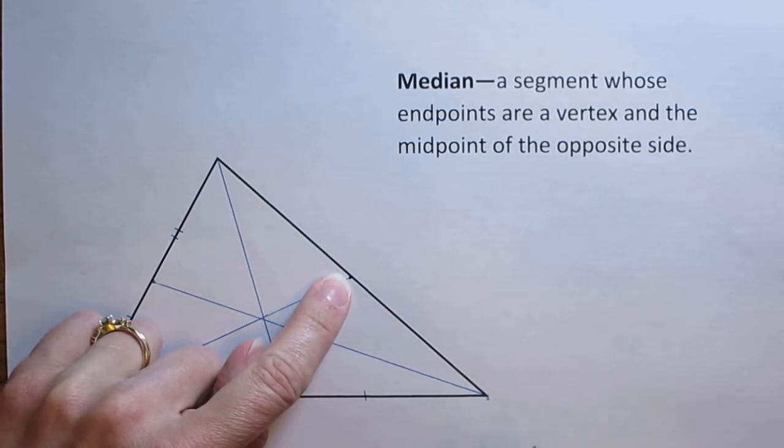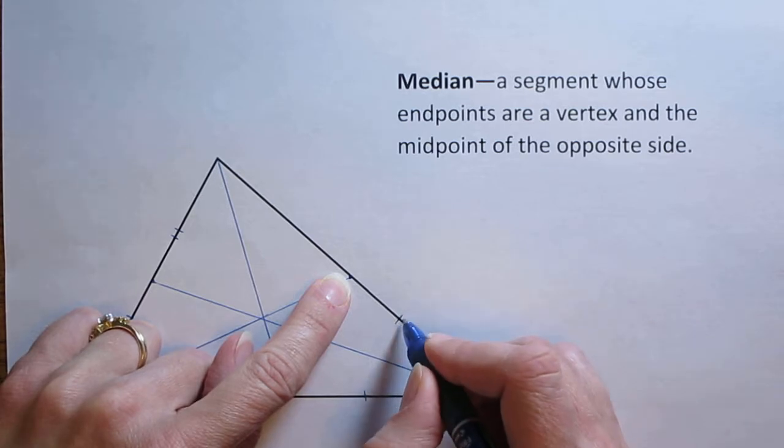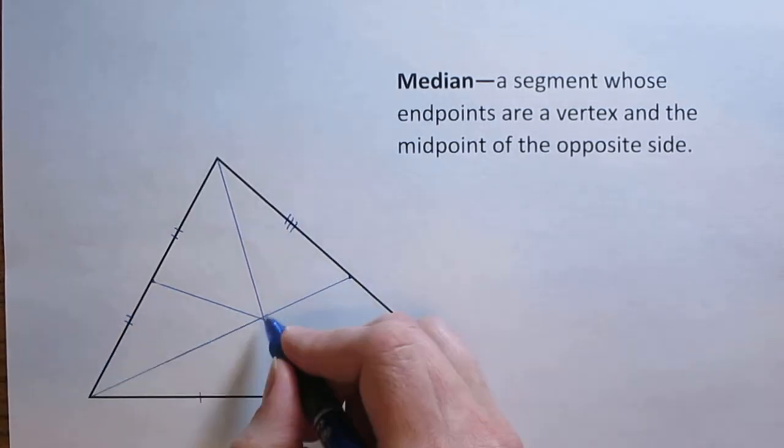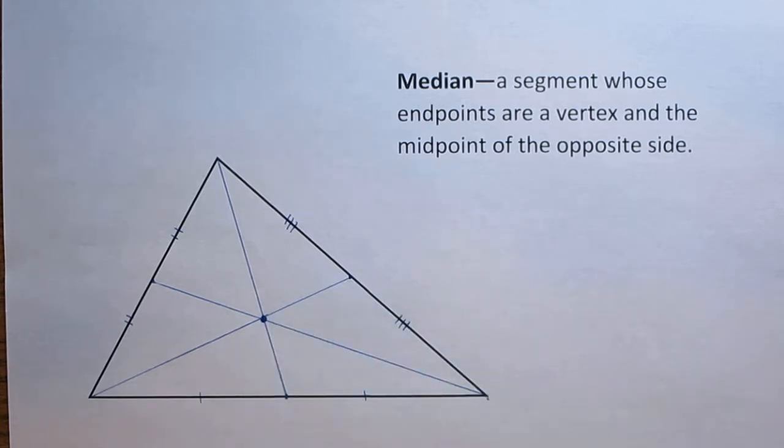Now again, since that's a midpoint, that's going to divide this side of my triangle into two congruent parts. I'm going to mark those as congruent. Now we'll notice that those medians all meet up at one point together. The point where the medians meet up is called the centroid.